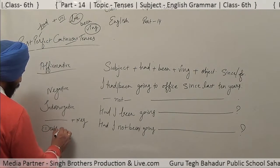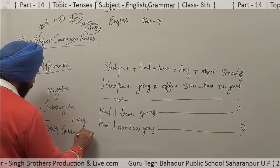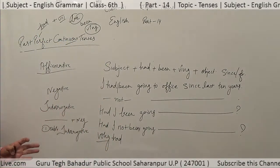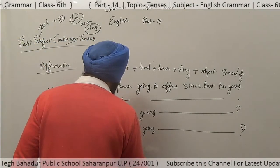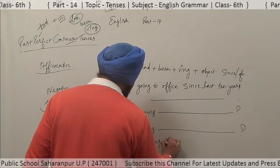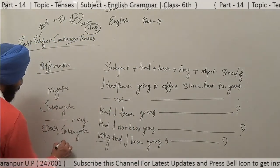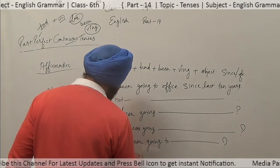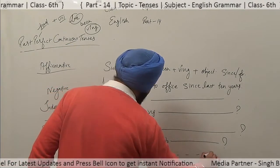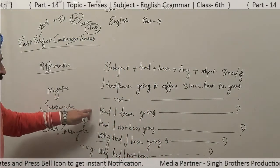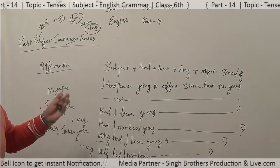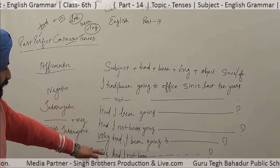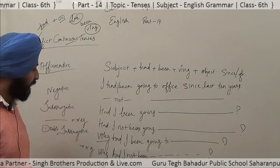In the case of double interrogative, you add WH words — when, where, why, which — before 'had.' For example: Why had I been going to office since last ten years? And for double interrogative plus negative: Why had I not been going to office since last ten years? So if you add a WH portion in interrogative, it becomes double interrogative; if you add 'not,' it becomes double interrogative plus negative.